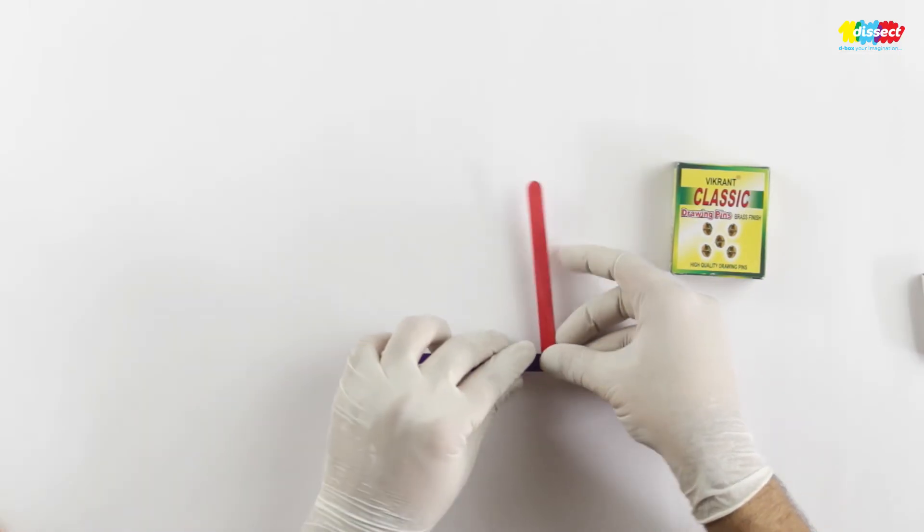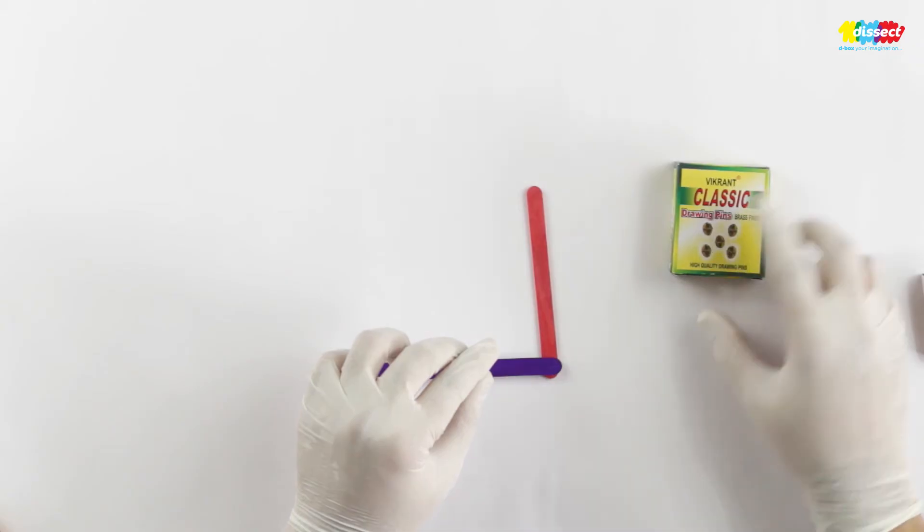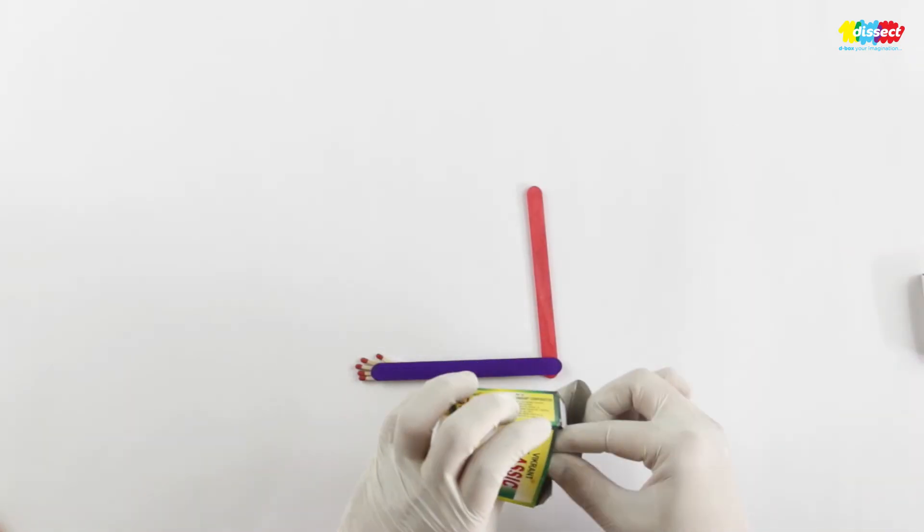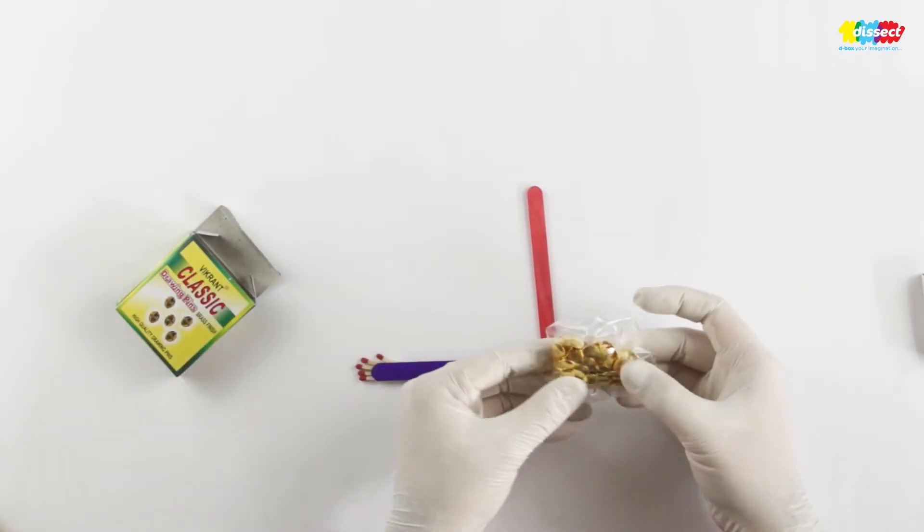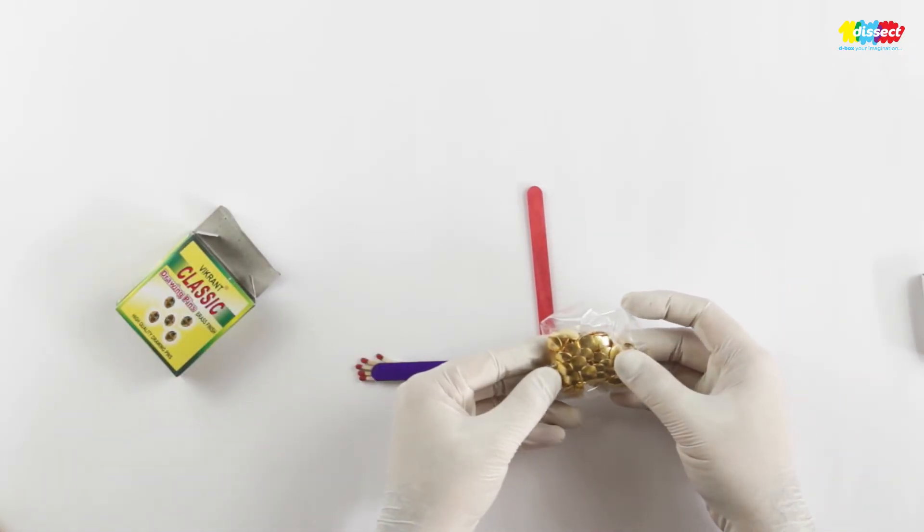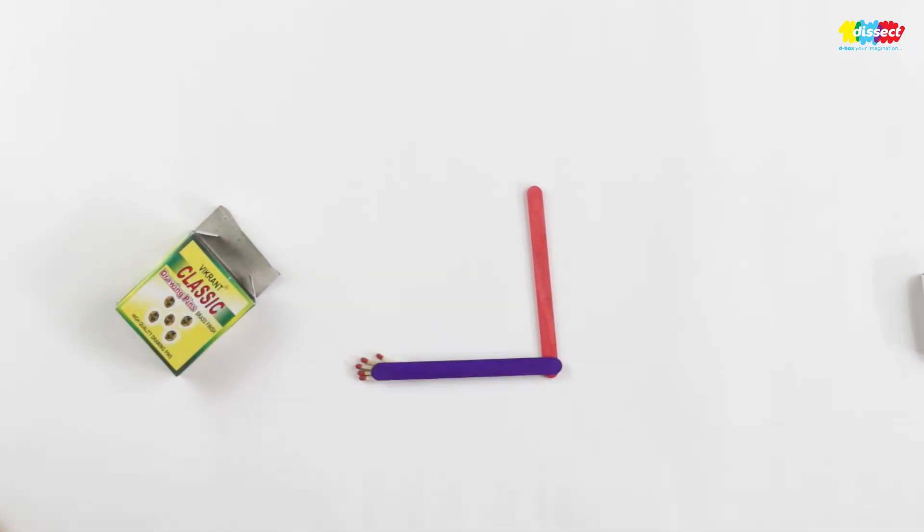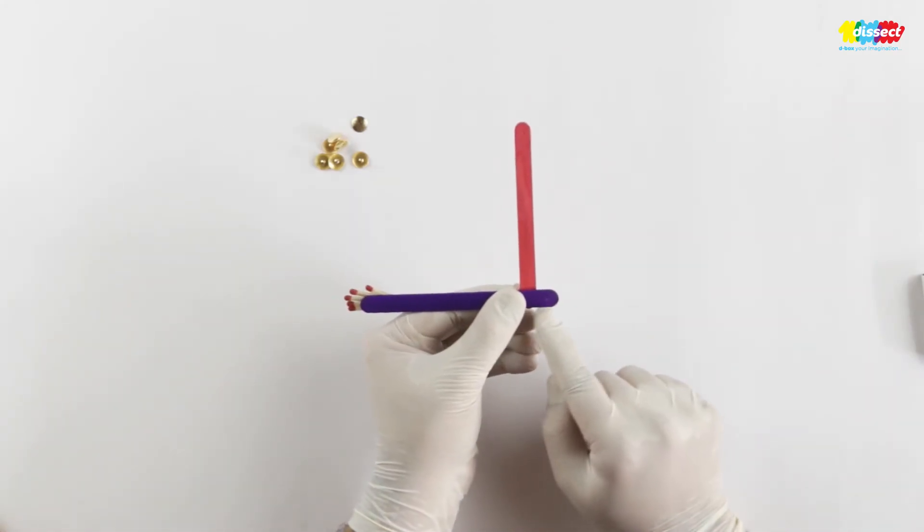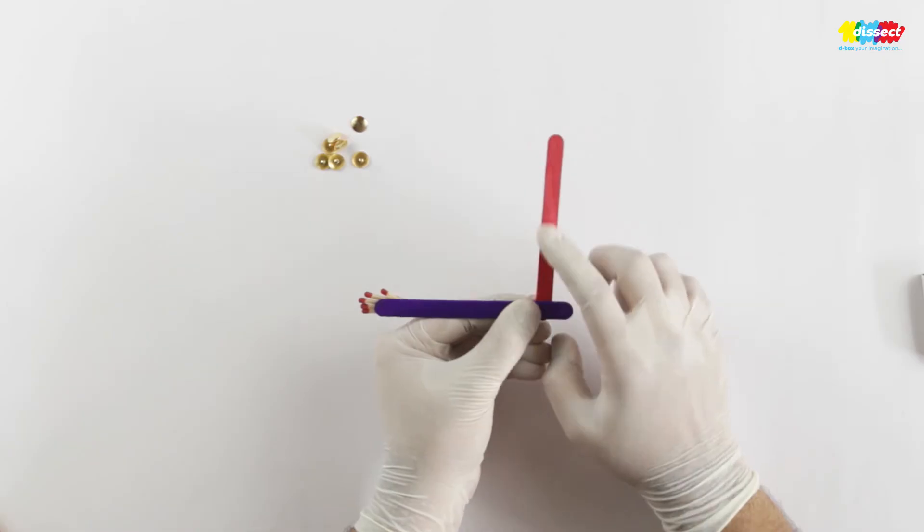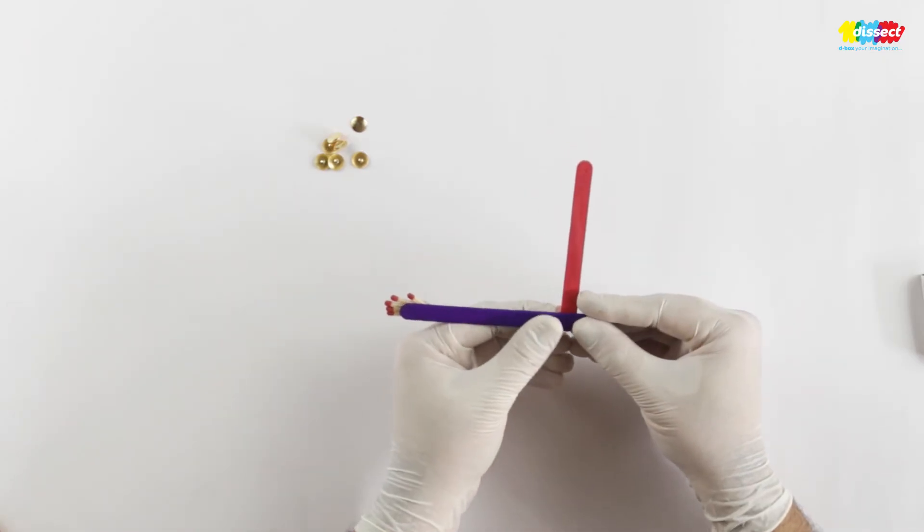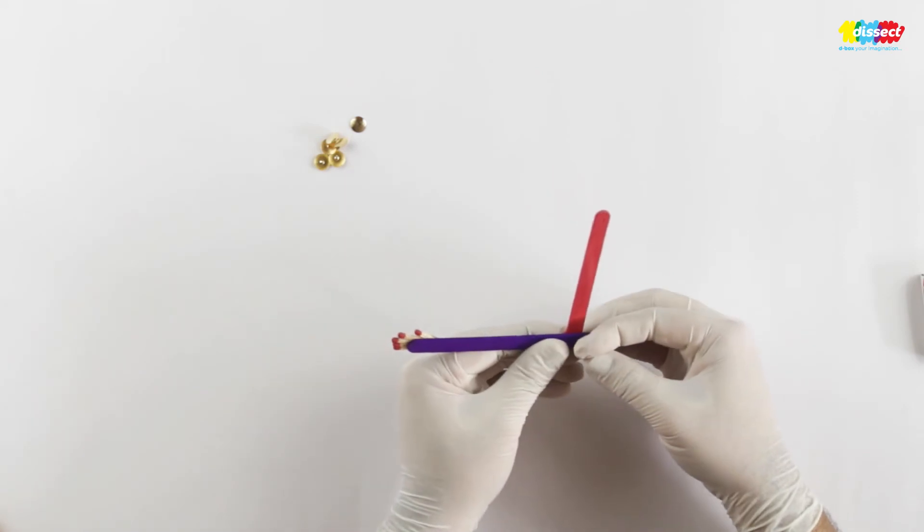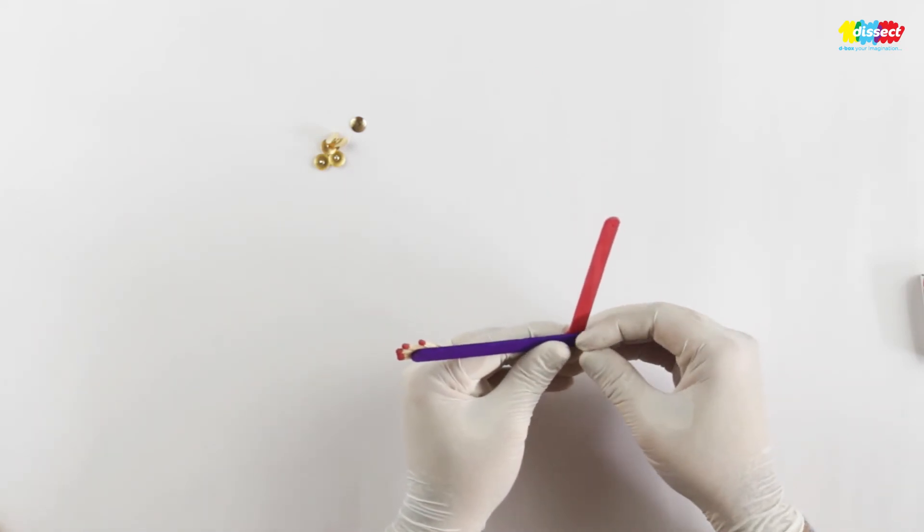We fix these using drawing clips. We will be using these drawing clips to affix those. We are going to affix it like this. We will have some part of the arm extending beyond the red stick. We will try to affix this using one of these pins.